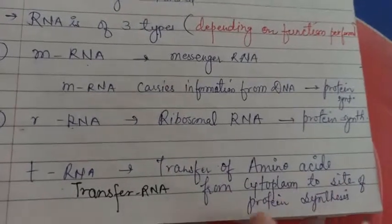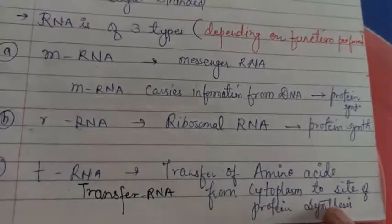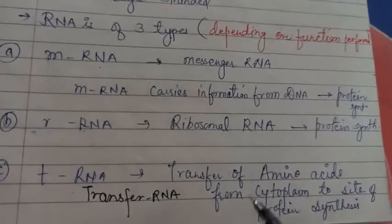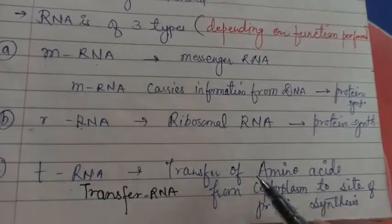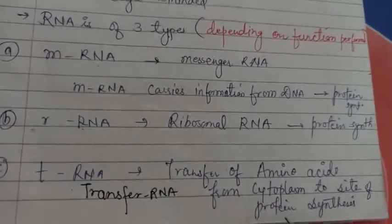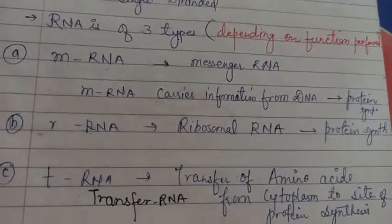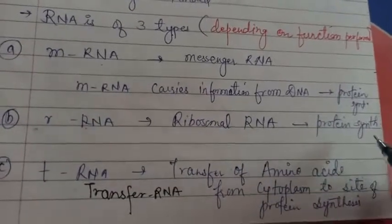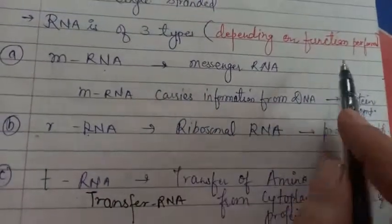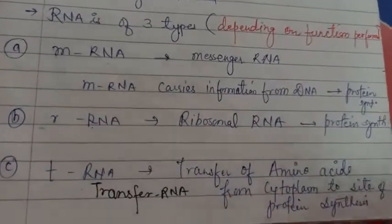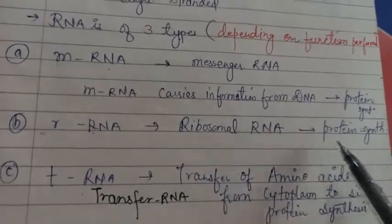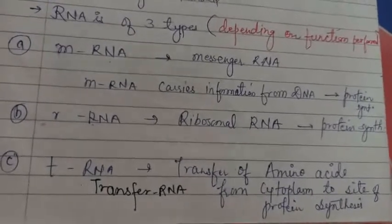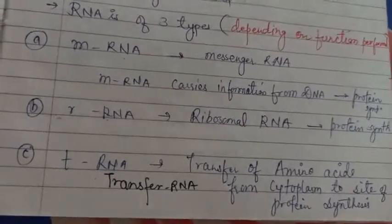Transfer of amino acids from cytoplasm to site of protein synthesis. What is the function of tRNA? It does the transfer of amino acid from cytoplasm to the protein synthesis site. So the purpose is protein synthesis. Messenger RNA carries the message, ribosomal RNA synthesizes ribosomes and helps in protein synthesis, and transfer RNA transfers amino acids during protein synthesis.